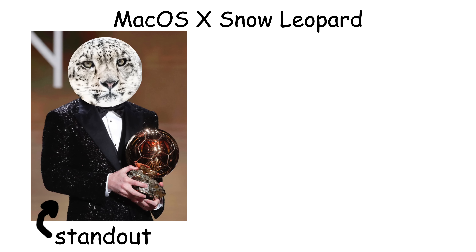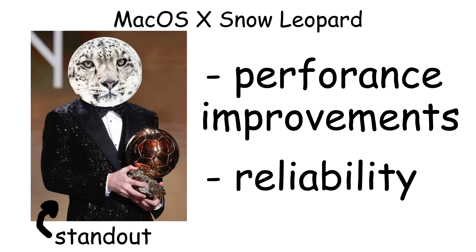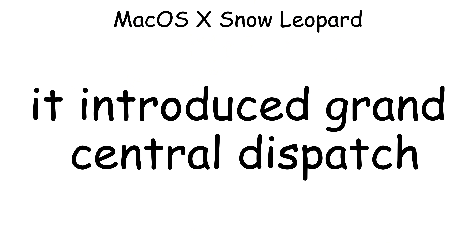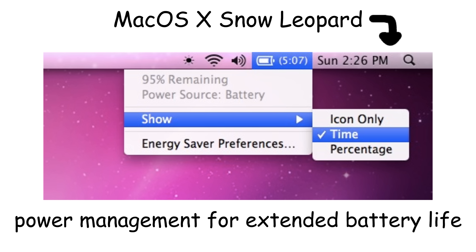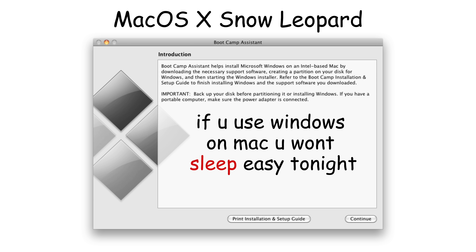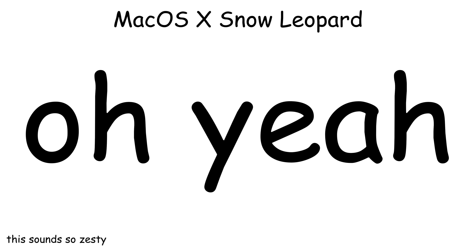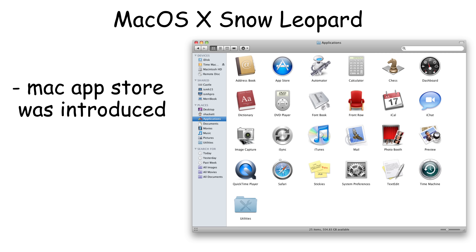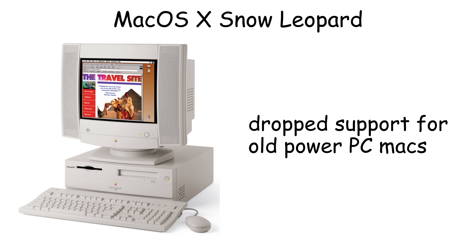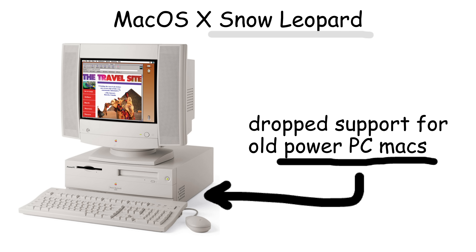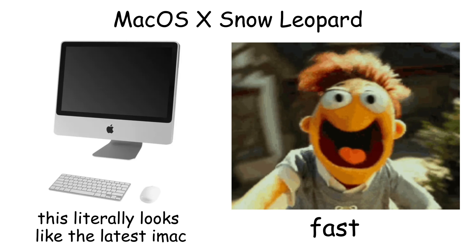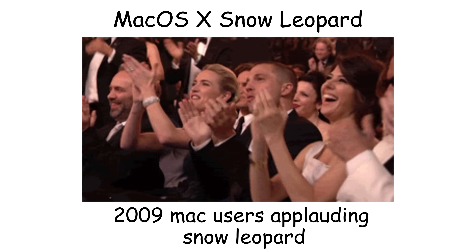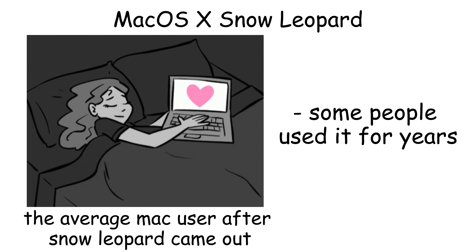What made Snow Leopard stand out was its performance improvements and reliability. It introduced Grand Central Dispatch, which allowed better utilization of multi-core processors. Snow Leopard also improved power management for extended battery life and added better Microsoft Exchange support. The Mac App Store was also introduced, simplifying app discovery and updates. However, Snow Leopard dropped support for older PowerPC Macs. But for supported Macs, Snow Leopard was incredibly stable and fast, which is why many users considered it one of the best Mac OS X versions ever, and some continued using it for years.